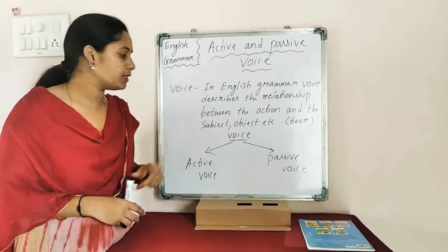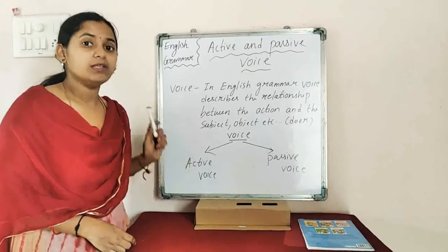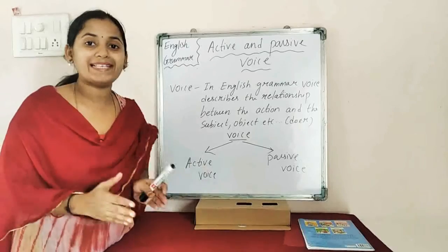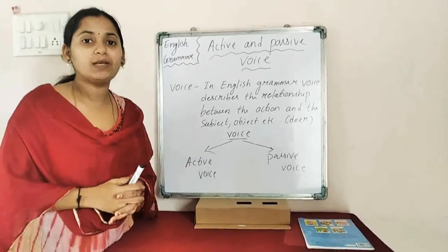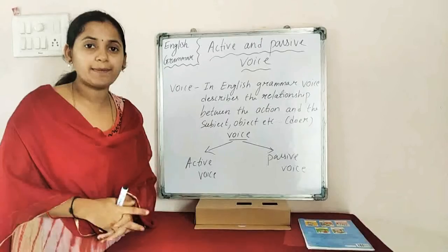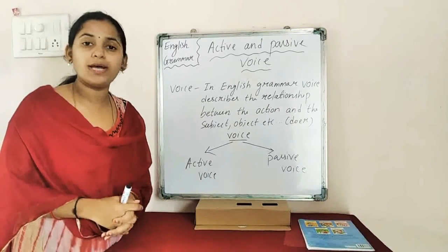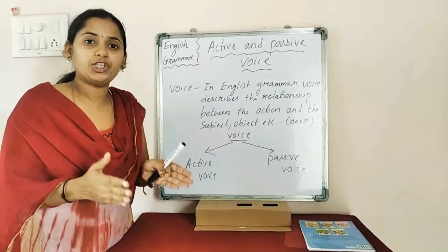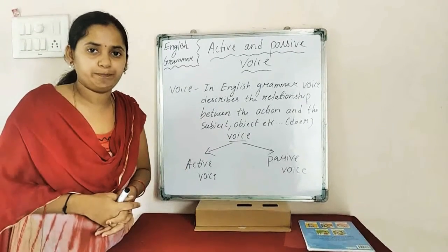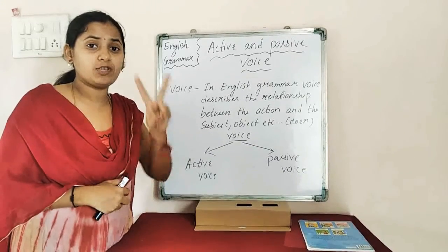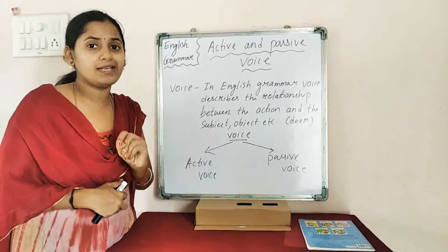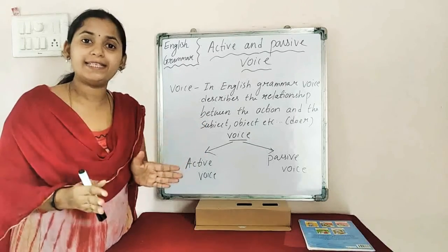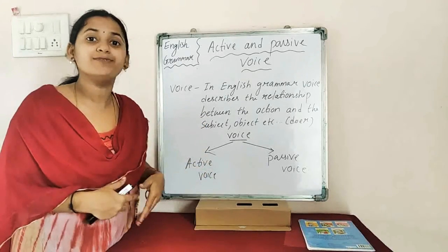Voice in English grammar is of two types. The first one is the active voice, and the second one is your passive voice. Voice means it describes the relation between the action and the doer of the action. The voice is of two types: the first one is the active voice, and the second one is the passive voice. Let's see what these active and passive voices are, with examples.